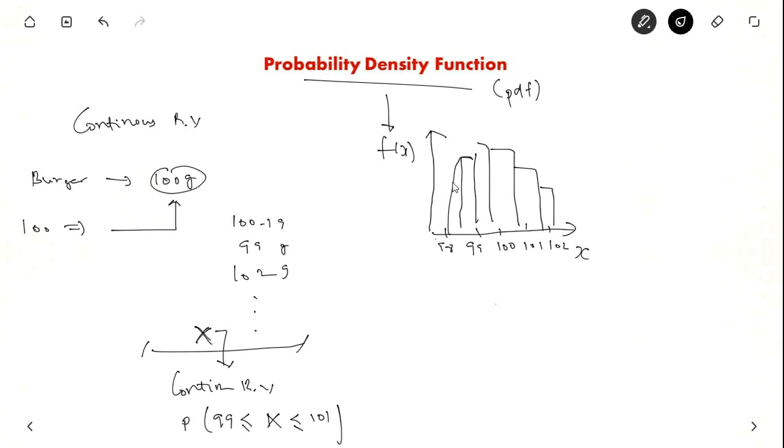If you reduce the histogram size, this will become even thinner. Like let us say 0.5 is the difference. 100, 100.5, this is 99.5. So, you will get very thin lines. And if you keep on doing this, it will become a curve like this. This is f of x and this is x, infinitely small interval. So, this is probability density function.